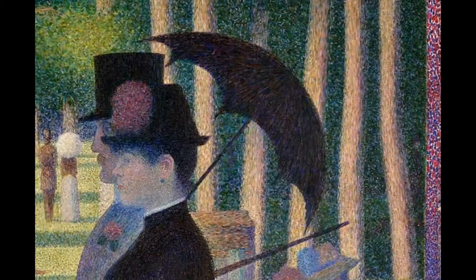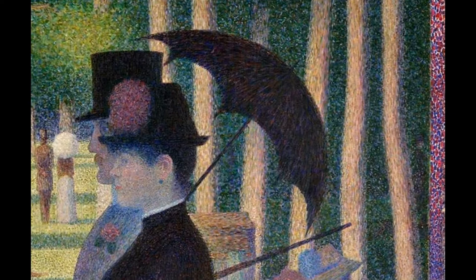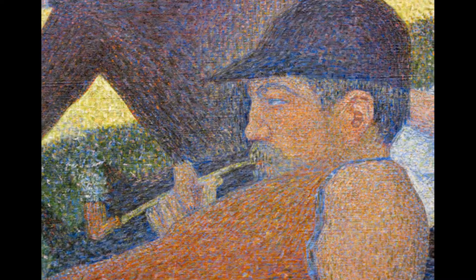Seurat found that, instead of mixing colors together on a palette, he could place tiny dots of different colors next to each other in his paintings, and the human eye would mix the colors visually.